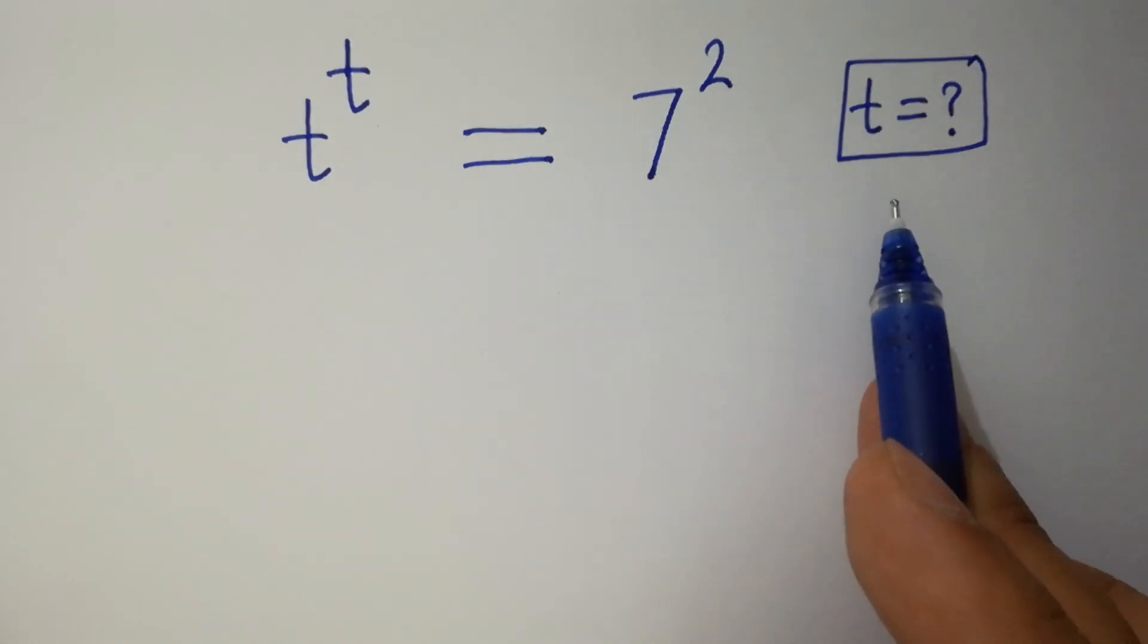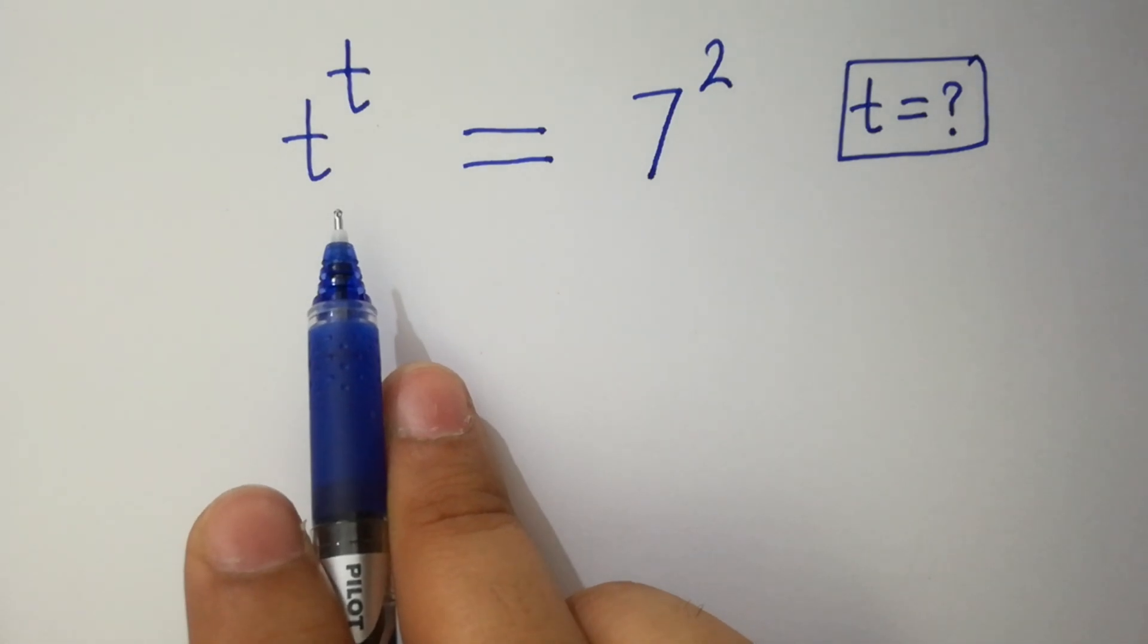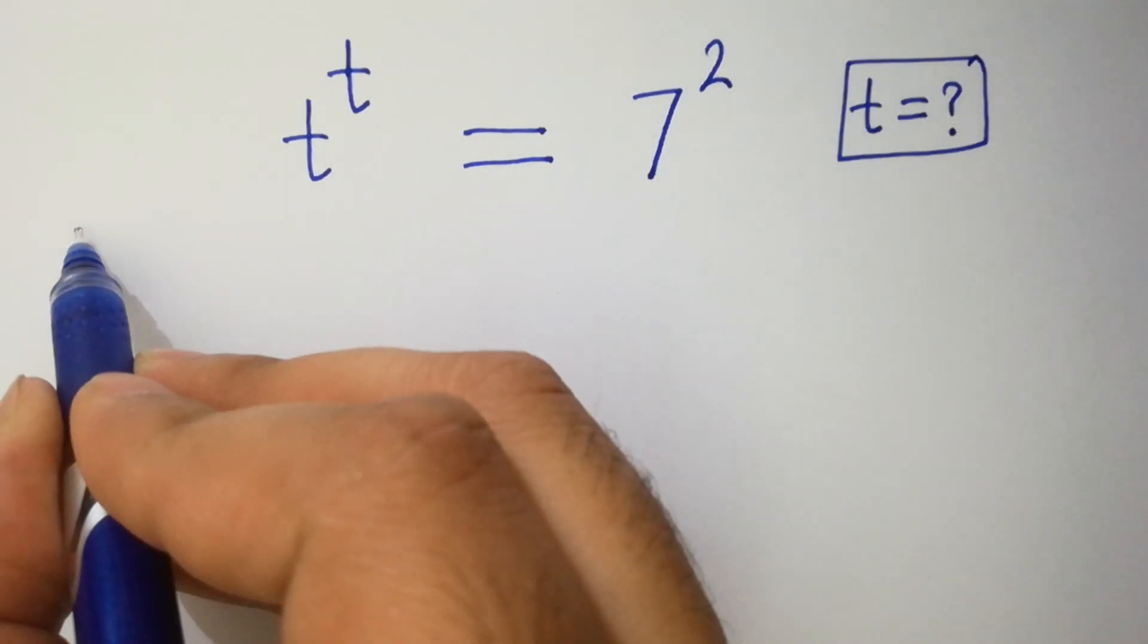Hello friends, find the value of t if t to the power t equals 7 squared. Let's have a solution.